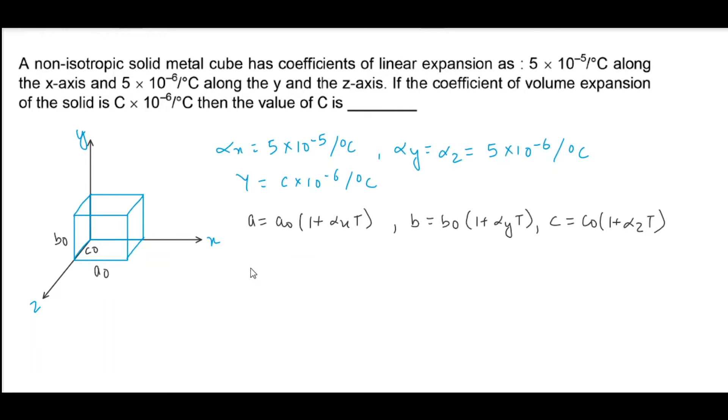So the new volume will be a into b into c, that is a0 times 1 plus alpha x into T, into b0 times 1 plus alpha y into T, into c0 times 1 plus alpha z into T. So V is equal to a0 b0 c0 into 1 plus alpha x into T times 1 plus alpha y into T times 1 plus alpha z into T.